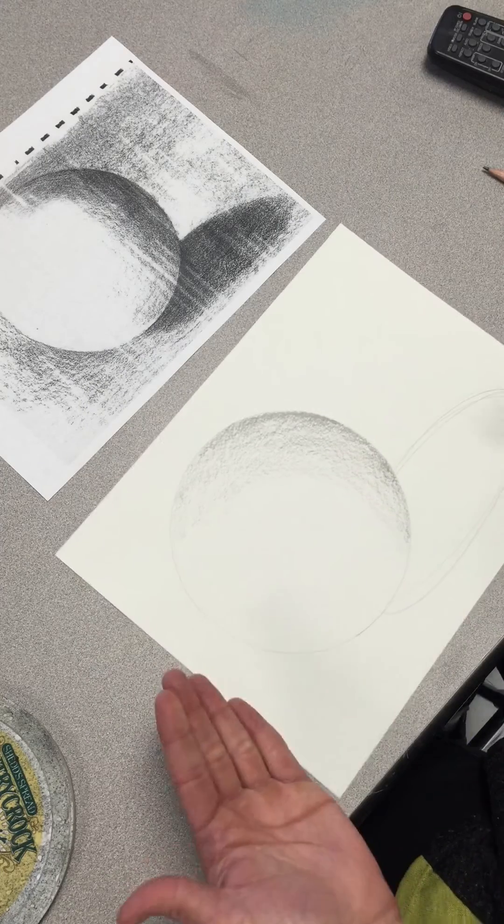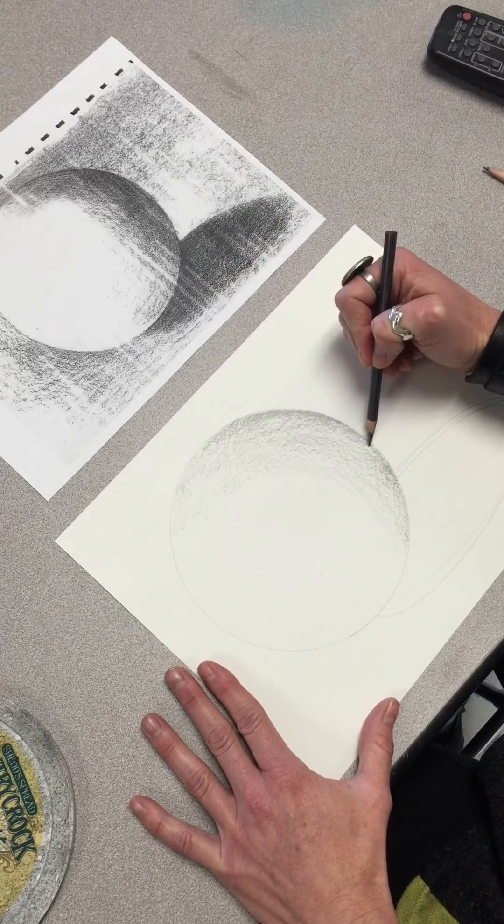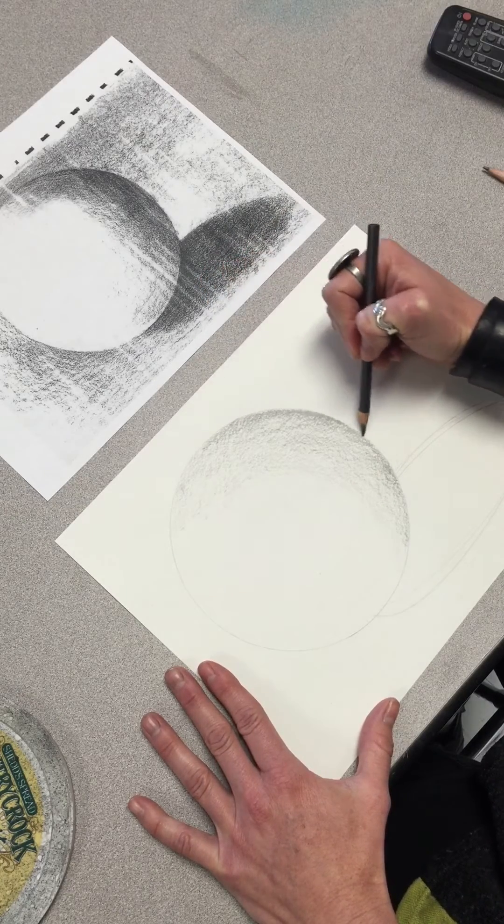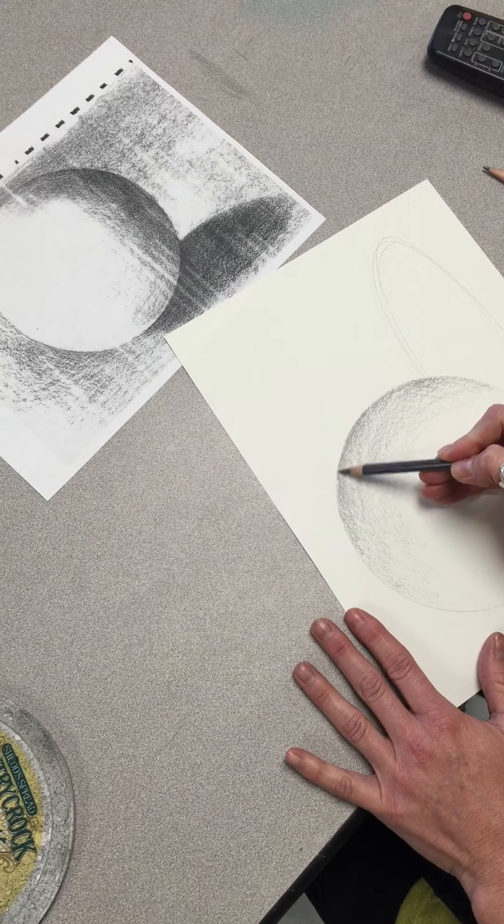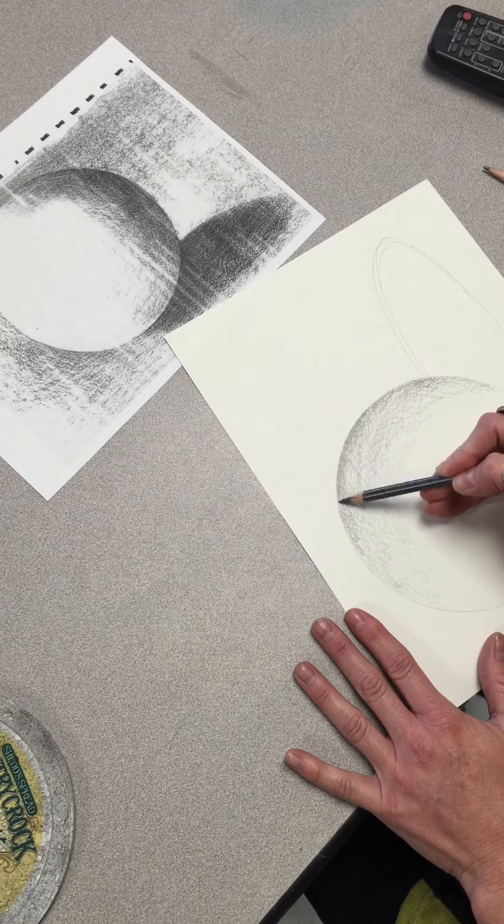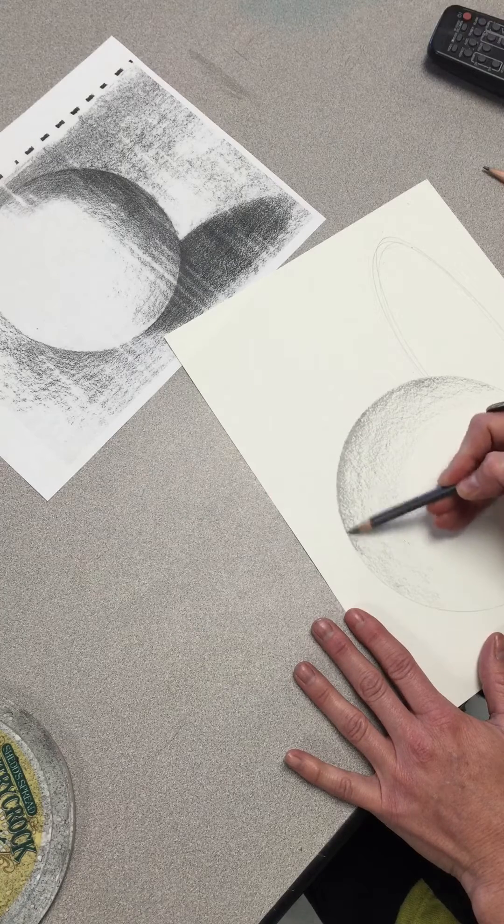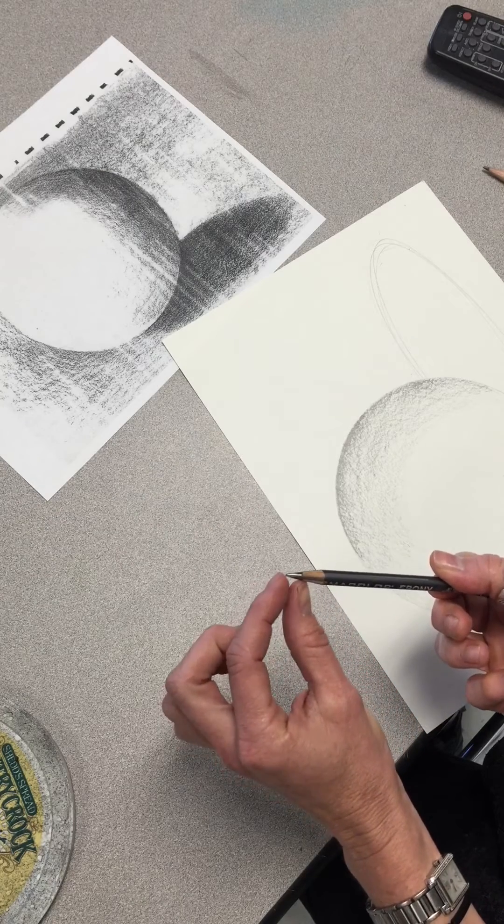It's already starting to take shape. I don't have it dark enough yet up here. It needs to go all the way to black, so I'm going to use the tip of my pencil to get right on that edge. We've been holding the pencil sideways so that we're shading with the entire edge of the pencil lead.